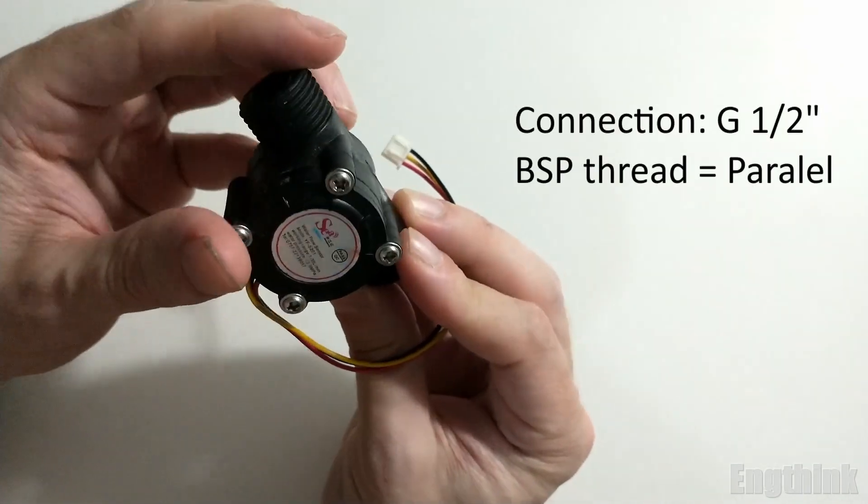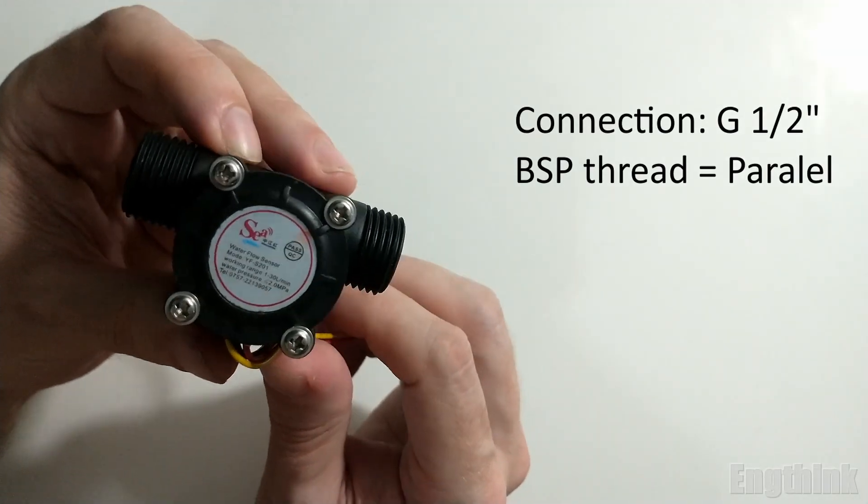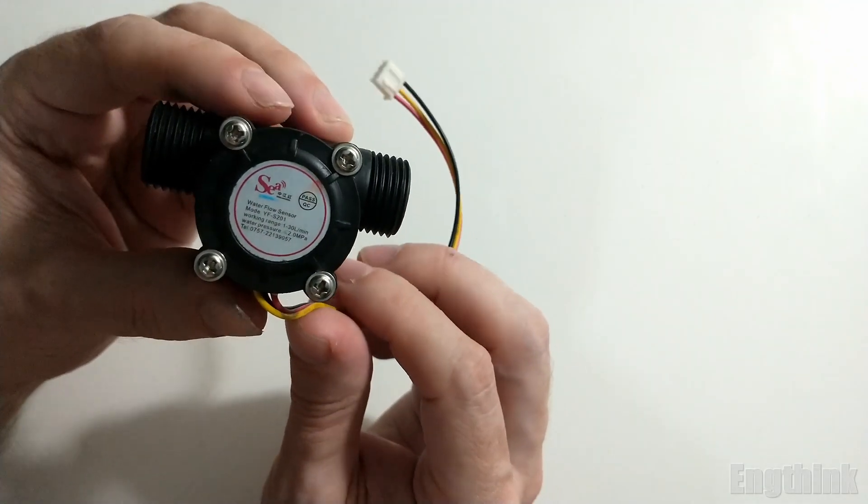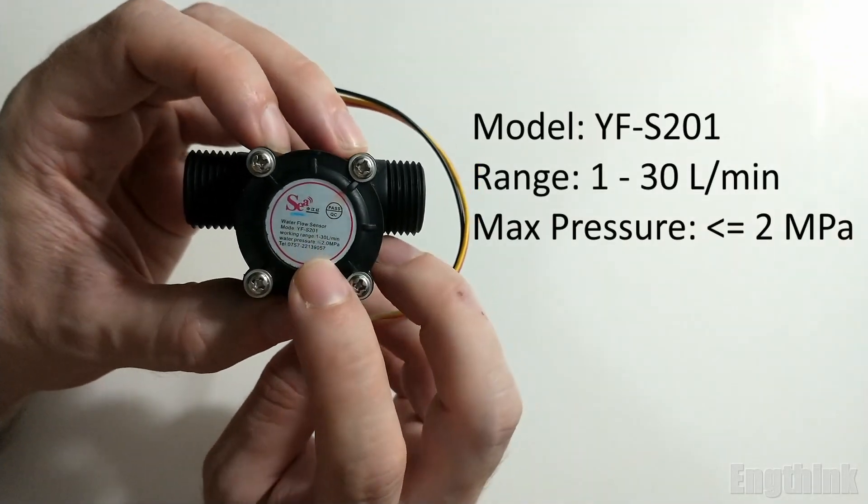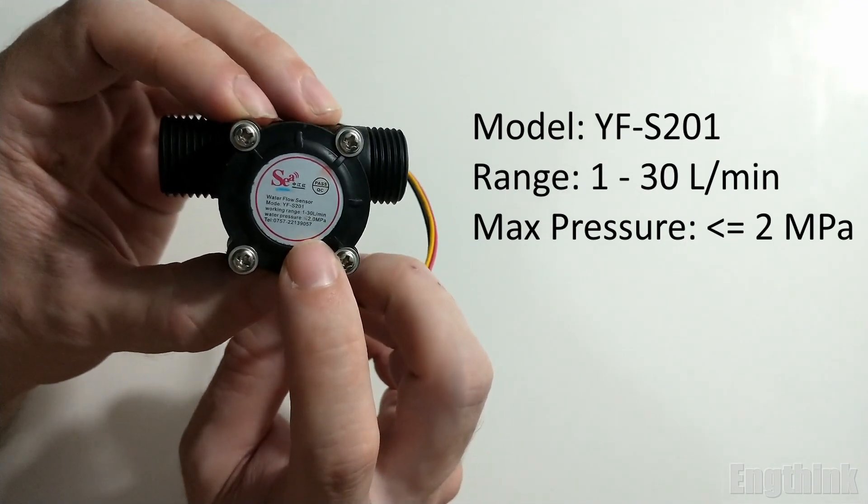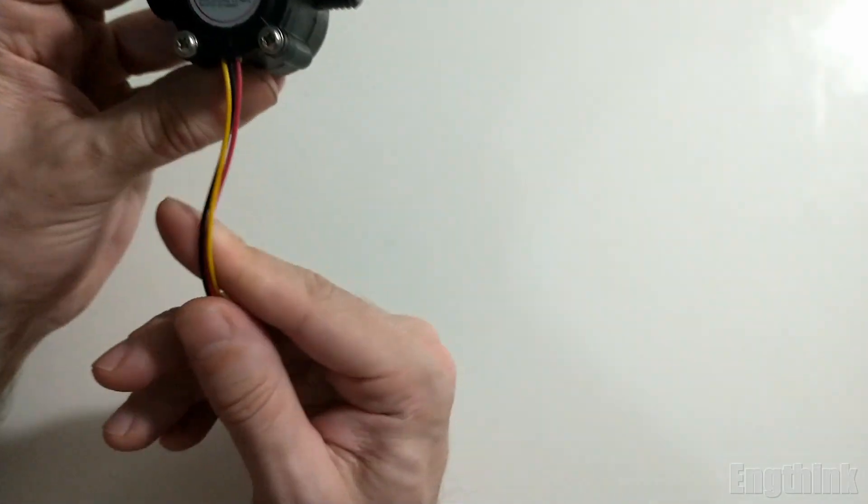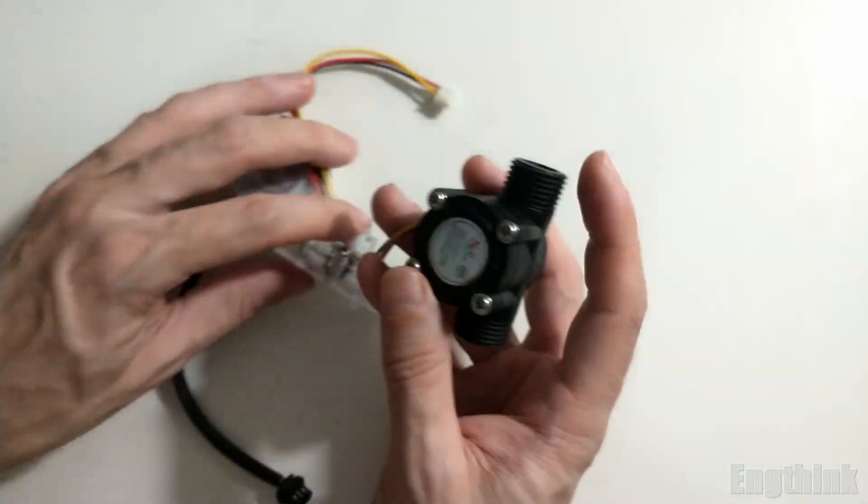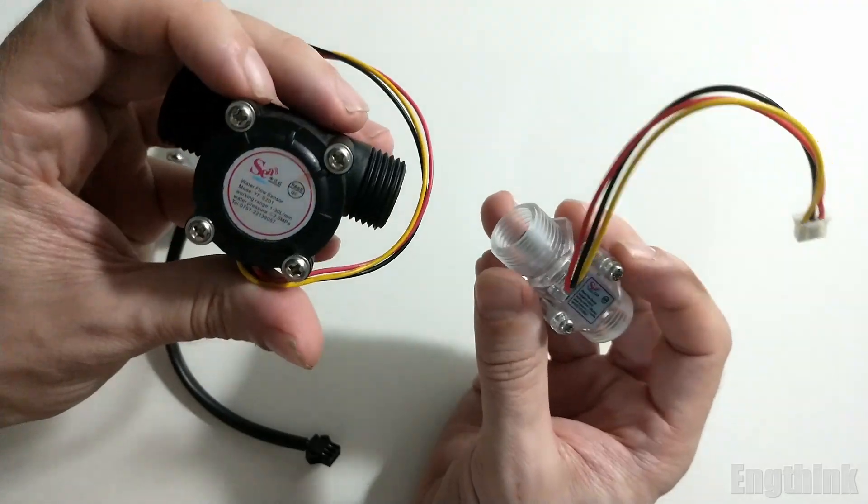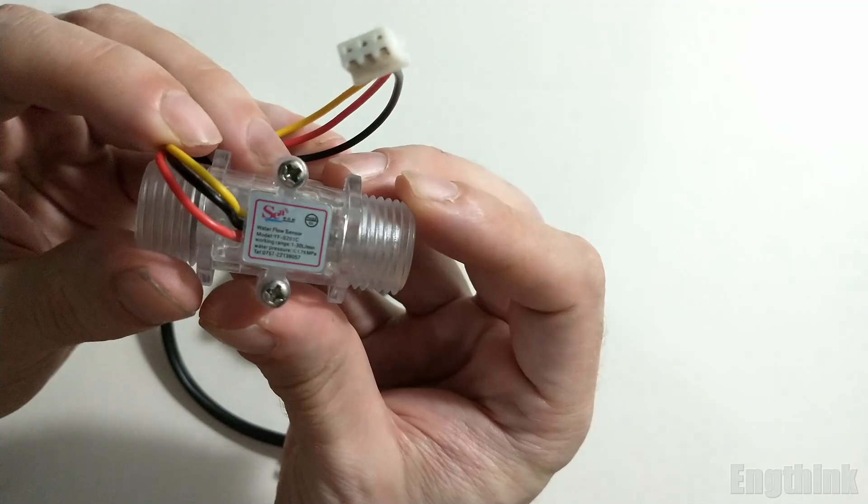This model has connection with threads with the size of half an inch. Talking about the flow rate, this model has the capacity between 1 to 30 liters per minute and should work with a pressure less than 2 MPa. Regarding the electrical connection, it's the same for all models.